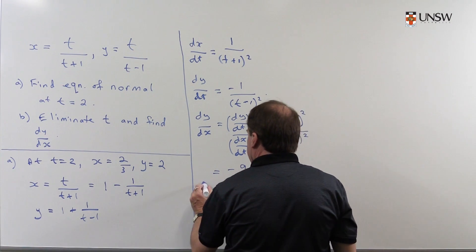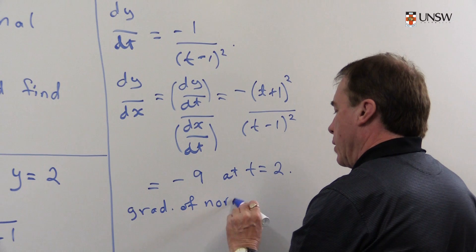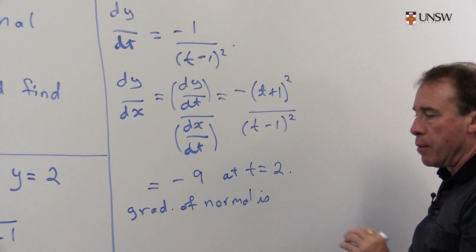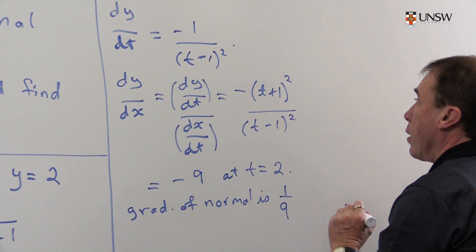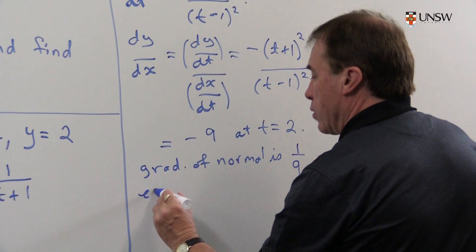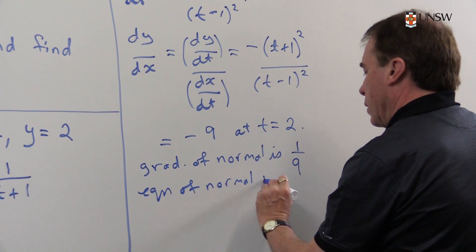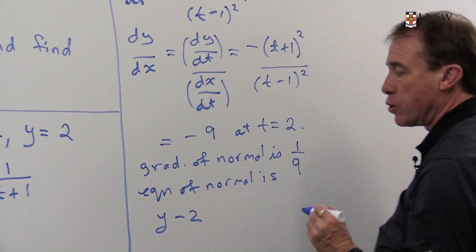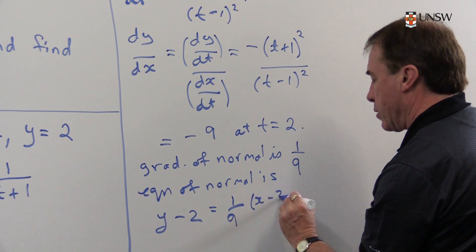So the gradient of the normal, gradient of the normal is, well, it's got to multiply by that to give me minus 1. So that's going to be 1/9. And I can now write down the equation of the normal is, I've got y minus my point, that's 2, is the gradient times x minus 2/3.